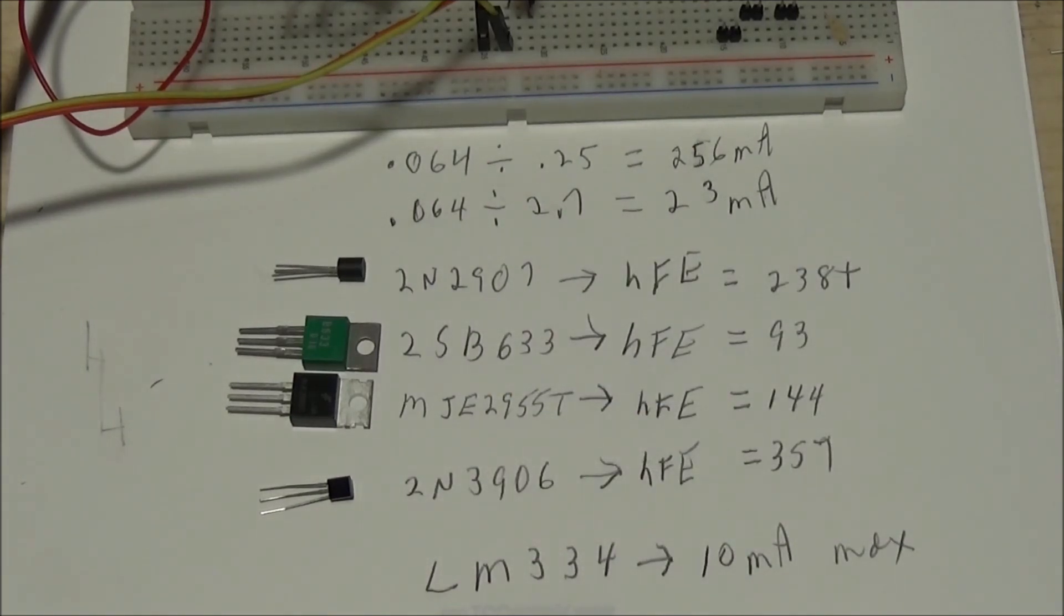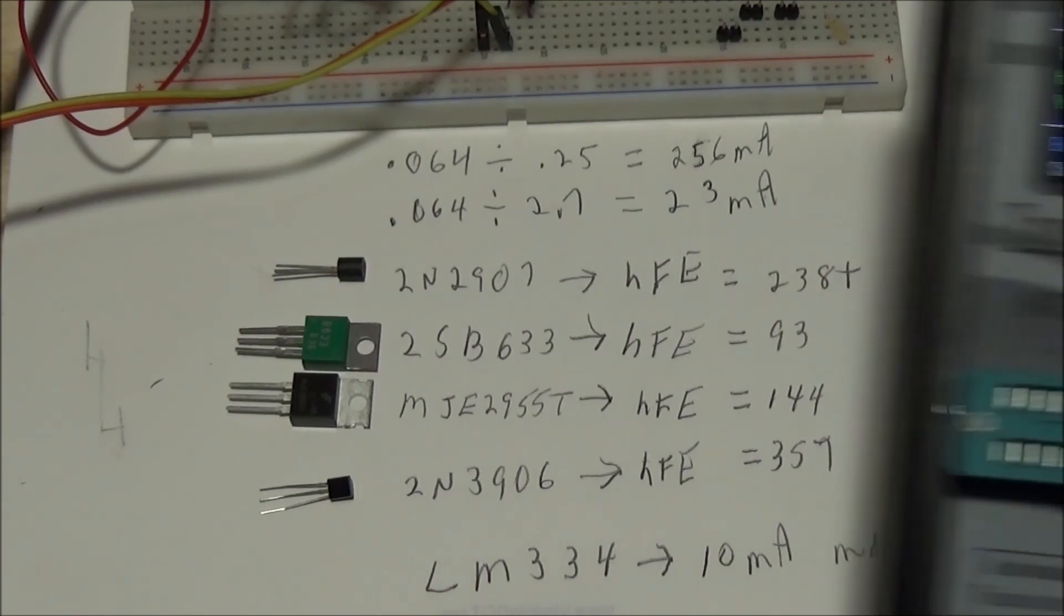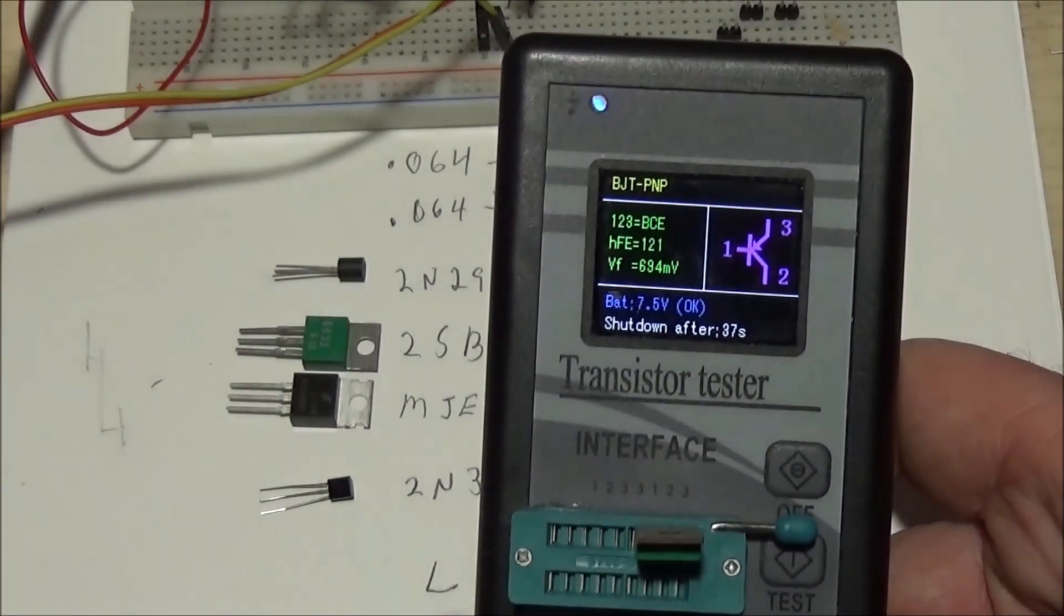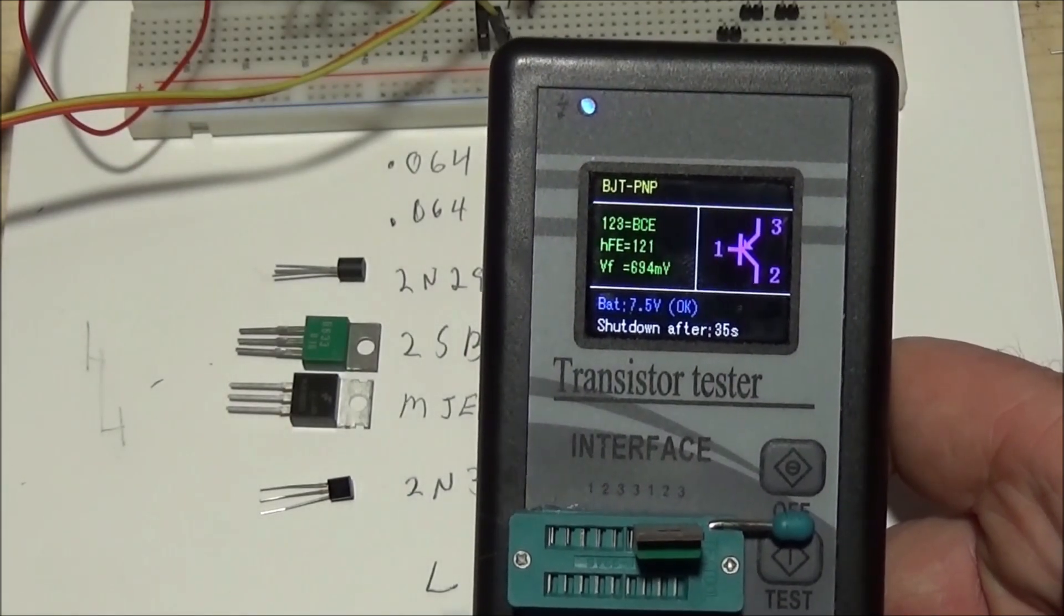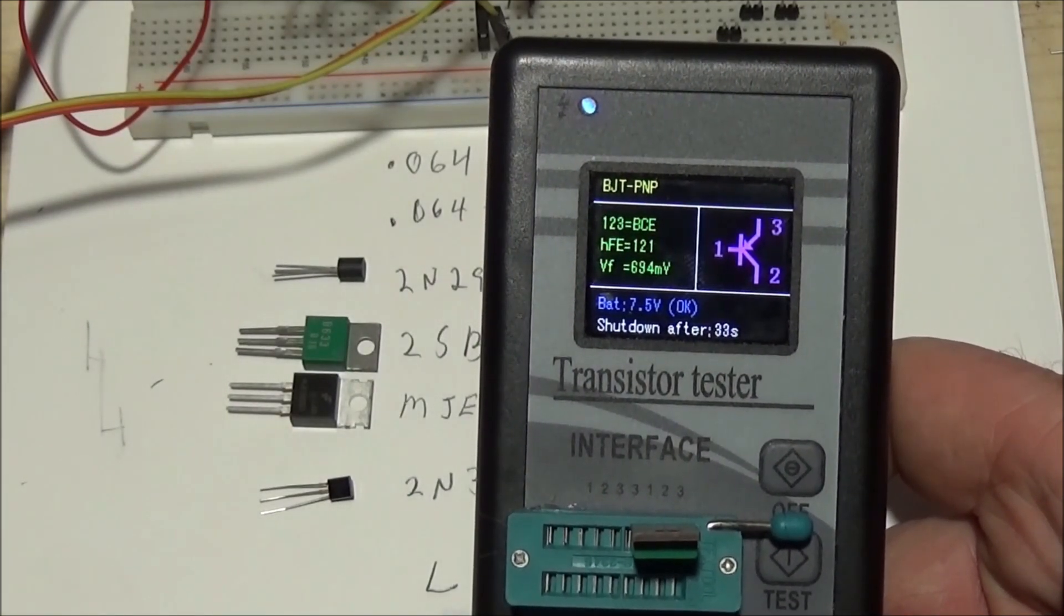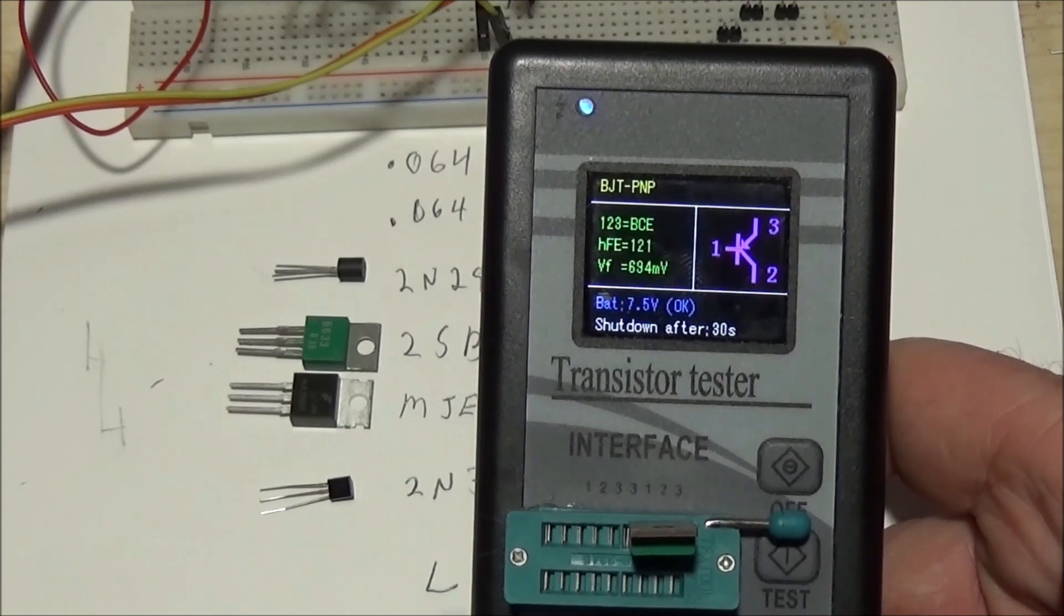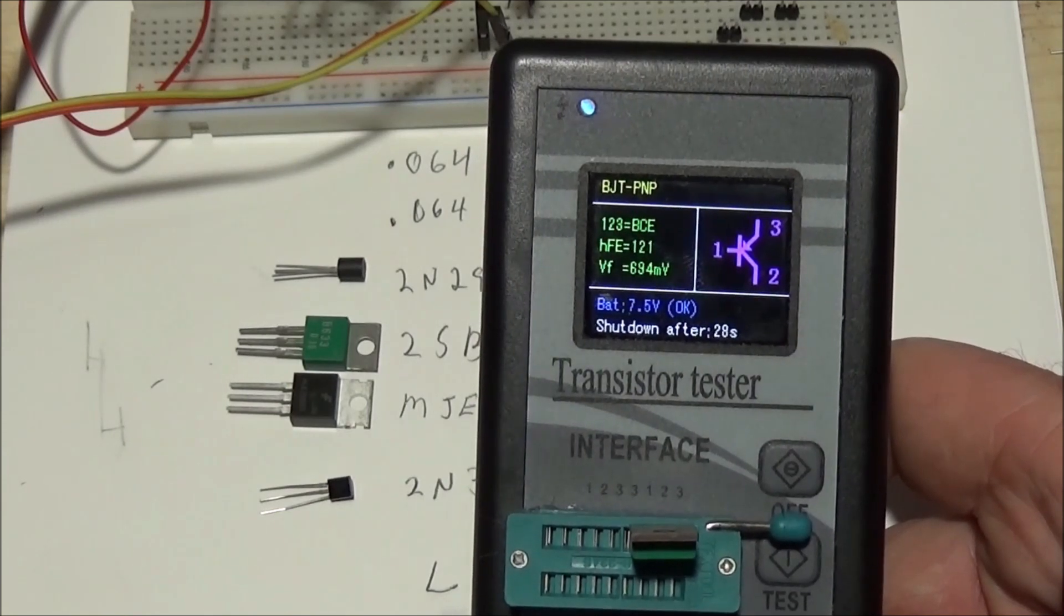These small signal transistors - I went and measured the DC current gain on these devices. Let's take this one right here. This one has an HFE of 121. It also happens to tell you the pin locations and so forth. In this case, you're looking at the 2SB633.